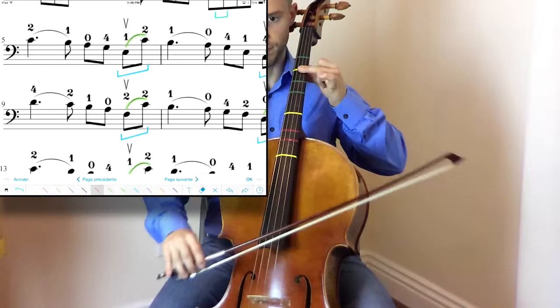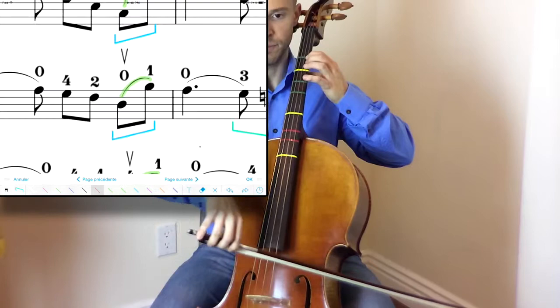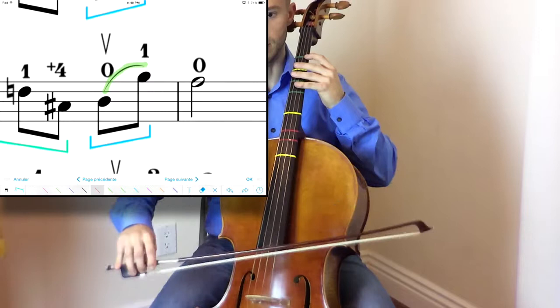And then we have measure ten, a zero, one. Hold down the one before you even play it. Up bow. Try a little hop if you like. Nice and low hop. And again, the same thing happens in measure eleven and twelve.